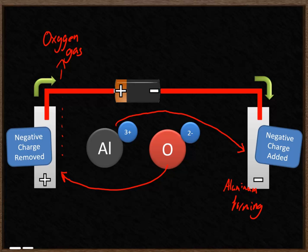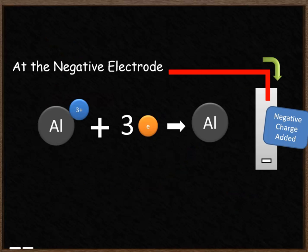So the way that you'll be able to detect that is you'd see bubbles being given off here, and around here you'd see molten aluminium, silvery metal forming. We're going to look at what happens at each of the two electrodes now.